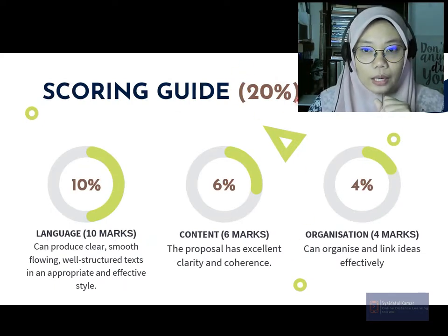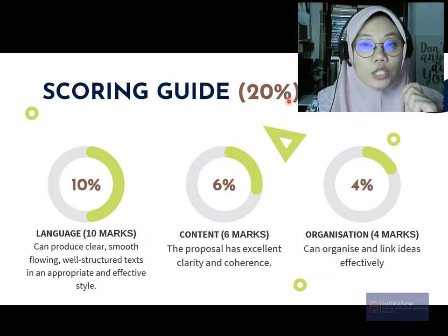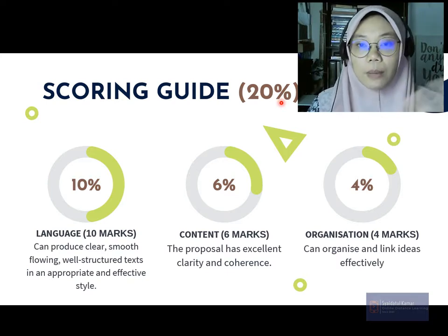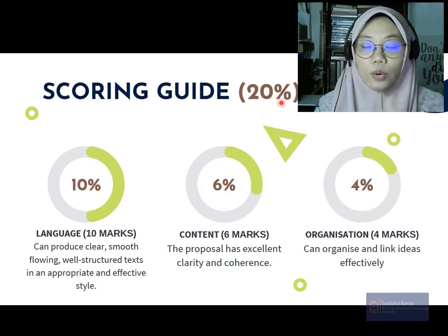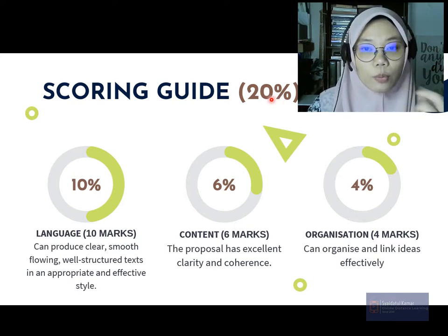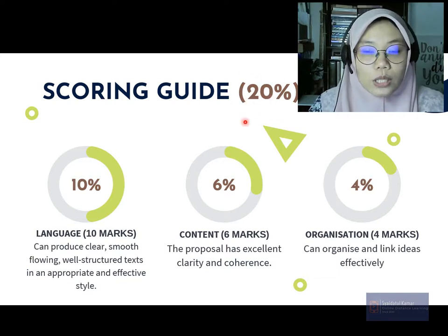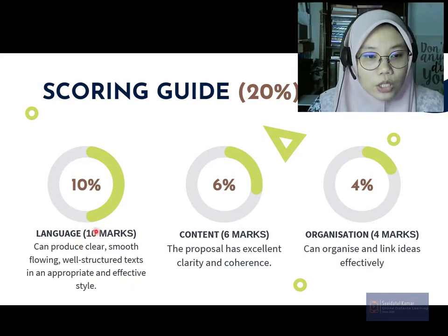The scoring guide shows that the final marks for the proposal is 20 percent. For Assessment 3, the marks is 30 percent and the marks are not the same for each member because it depends on your language ability. However, for Assessment 4, the proposal marks will be the same for all group members.